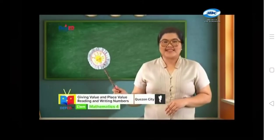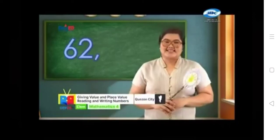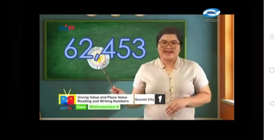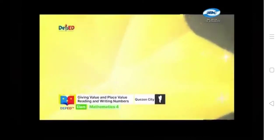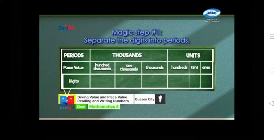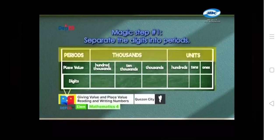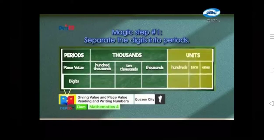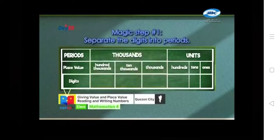We have 3 magical steps in order to read numbers up to 100,000. Let us take 62,453 as an example. Magic step number 1: separate the digits into periods. Let's review the place value chart. There are 3 rows: periods, place value, and digits. Periods are thousands and units. Under units, there are 3 place values: ones, tens, and hundreds. Under thousands, there are 3 place values: thousands, tens, and hundreds.